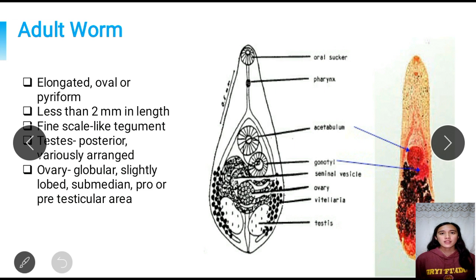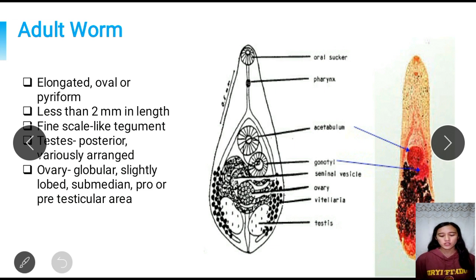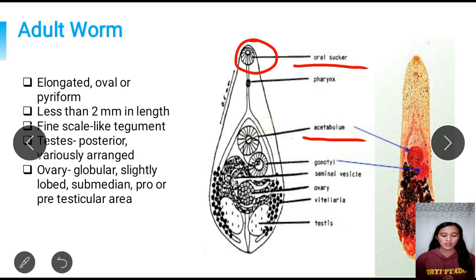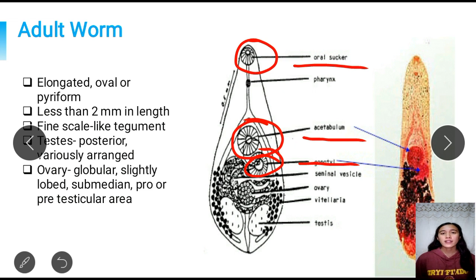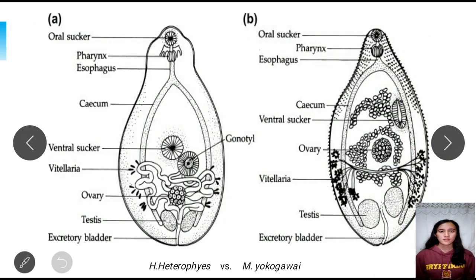The last morphological stage is the adult worm. Heterophaeids are hermaphrodites, meaning the adult worm exhibits both ovary and testes. Their shape is oval, elongated, or piriform. The size is less than 2 mm in length and they are surrounded by a fine scale-like tegument. Importantly, they have an oral sucker, an acetabulum (also called a ventral sucker), and a third sucker called the gonotyl or genital sucker. The gonotyl is a unique feature of the heterophaeids, as only heterophaeids among all trematodes possess it. These suckers are responsible for their adhesion to the intestinal walls of man.